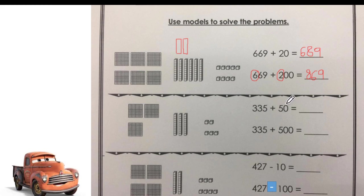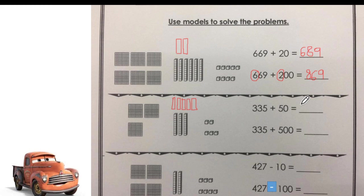Next one: 335 plus 50. We are going to add 50, which means 5 tens. I drew 5 tens. Hundreds digit and ones digit stay the same. Only the tens digit will change. So, hundreds is 300, it stays the same. Now we count how many tens we have — 1, 2, 3, 4, 5, 6, 7, 8. Now we have eight tens. And the ones stays the same: 5. The answer is 385.